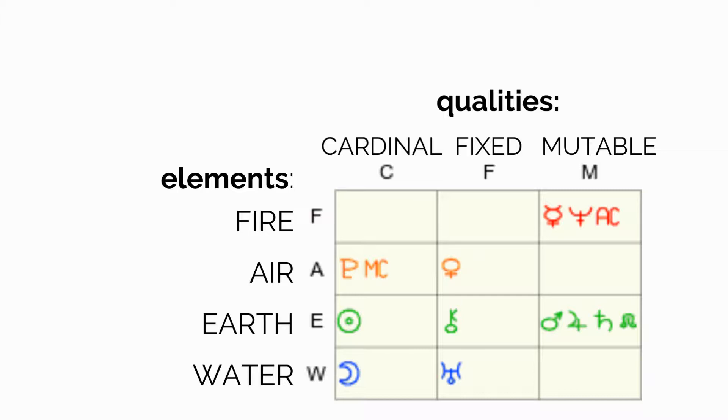Above the aspect grid is a table that shows the element and quality breakdown of the planets. There are four elements: Fire, which is the F; Air, which is the A; Earth, which is the E; and Water, which is the W. Each element has three zodiac signs. There are three qualities: Cardinal, which is the C; Fixed, which is the F; and Mutable, which is the M. Each quality has four zodiac signs. Qualities are also called modalities.